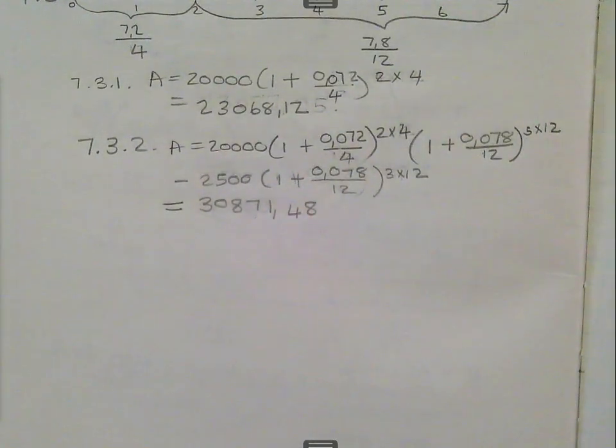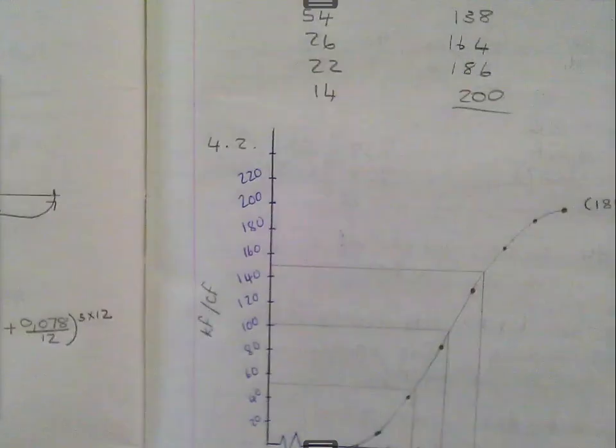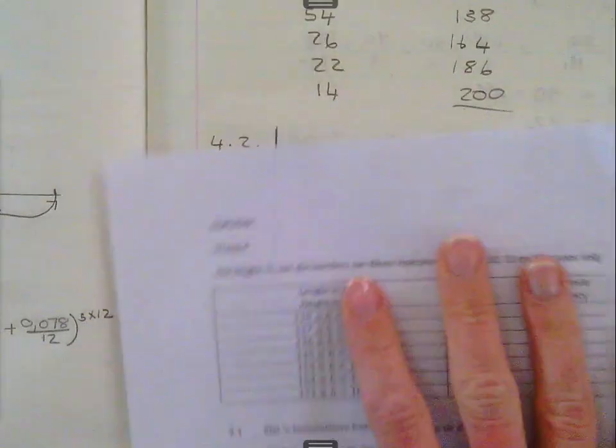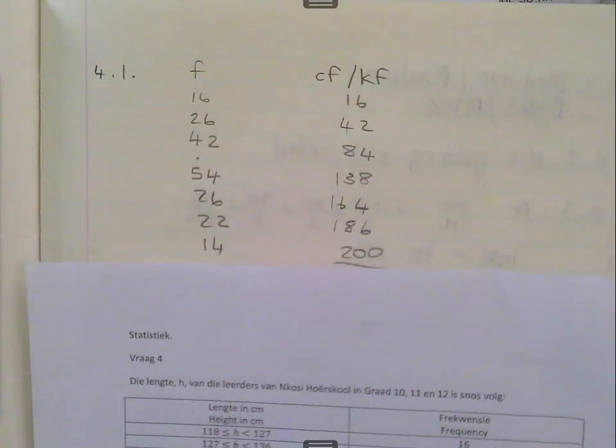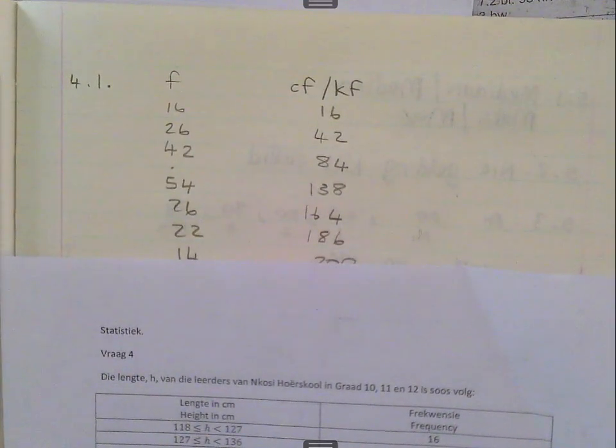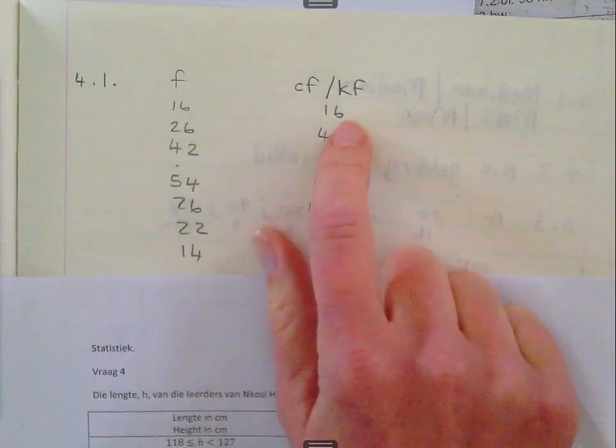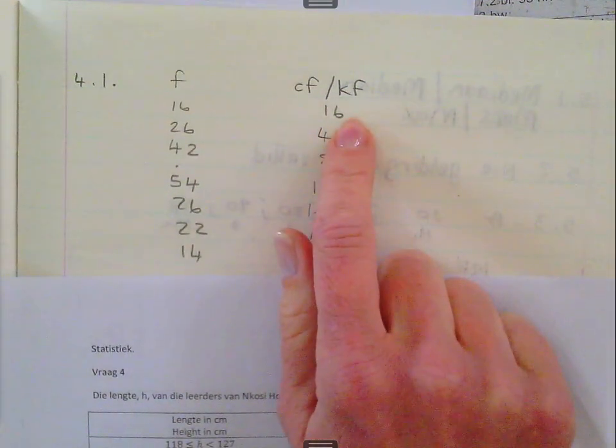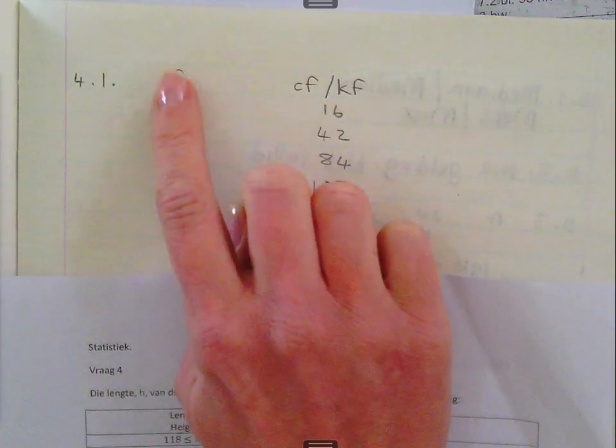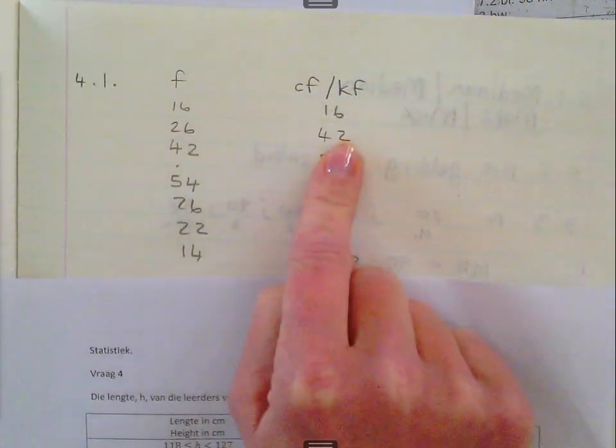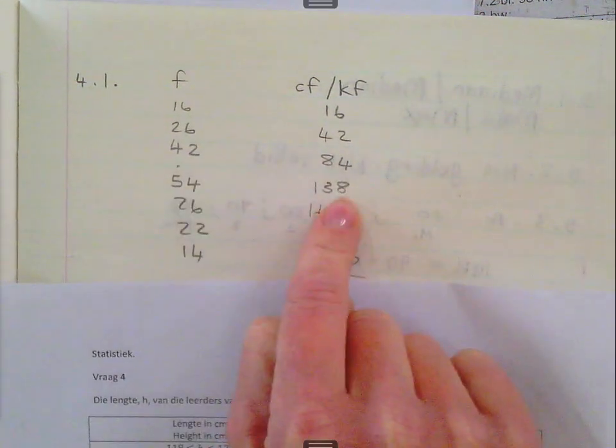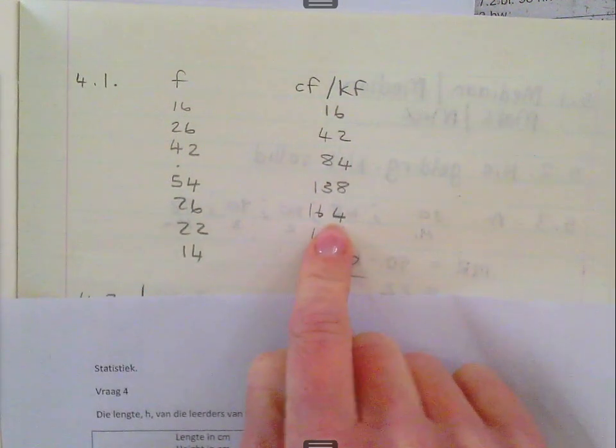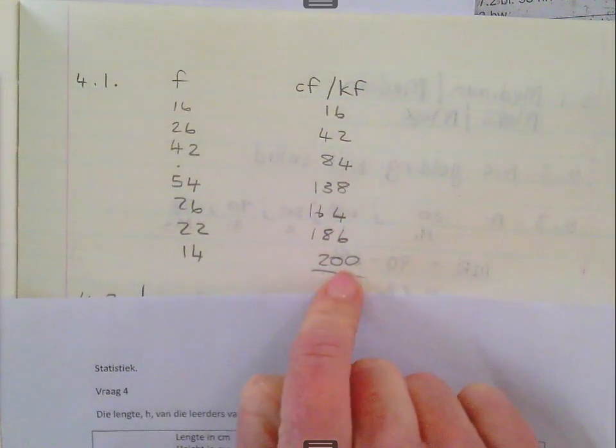Any questions on the finances? You are going to do the next question 7 today in class, so you will have another opportunity to just make sure that you are able to understand everything. Then we go to the statistics. So, the first question, they wanted you to set up a cumulative frequency table, but I told you you can just write the values there. Just remember the first cumulative frequency is 16. So, it's this one, plus whatever is above it, and there's nothing above it, so it's 16. Plus 26, 42. Plus 42 is 84. Plus 54 is 138. Plus 26 is 164. Plus 22 is 186. Plus 14 is 200.